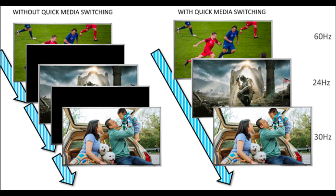Quick Media Switching, or QMS, uses VRR technology to allow instant changes between videos with different frame rates. This helps to eliminate AV blackouts that were common with previous HDMI versions. Anyone who's tried to play old consoles that switch between video modes on new TVs knows exactly what that's like.